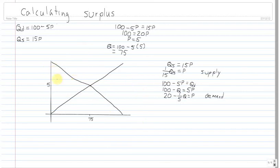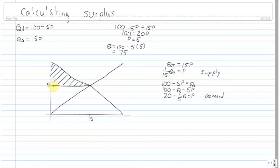Now a surplus is going to be — you can think of it like a profit. For consumer surplus, which we'll do first, it's the area underneath the demand curve but above the price. For example, suppose I was willing to pay $10 for a widget in this market, but instead I see a market price of $5. Well, I have $5 left over that I would have spent but didn't have to — so I have $5 of consumer surplus.